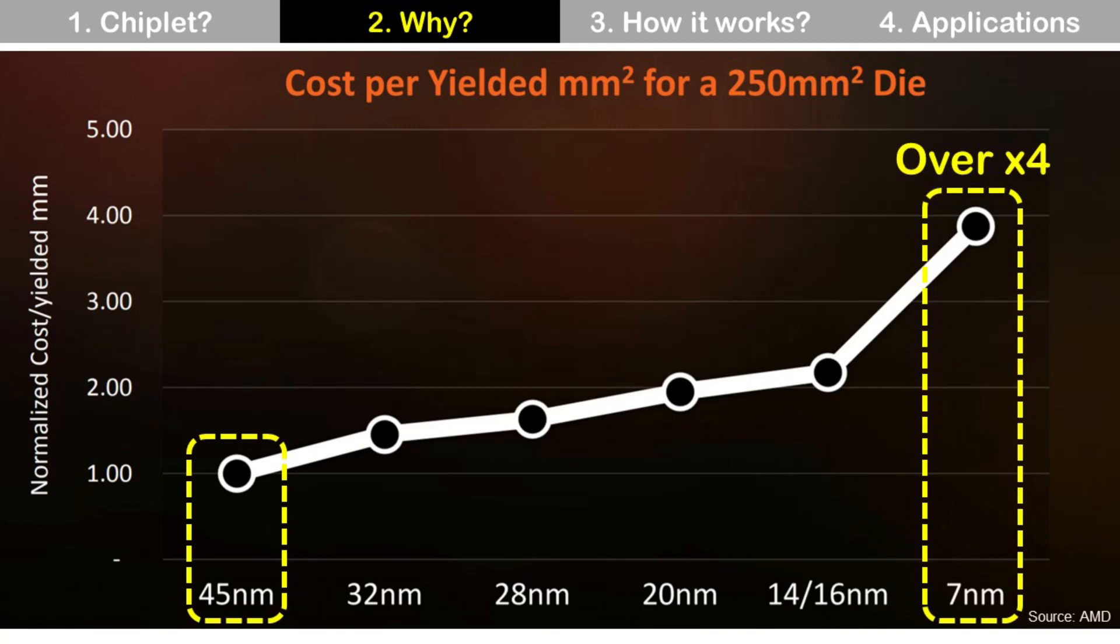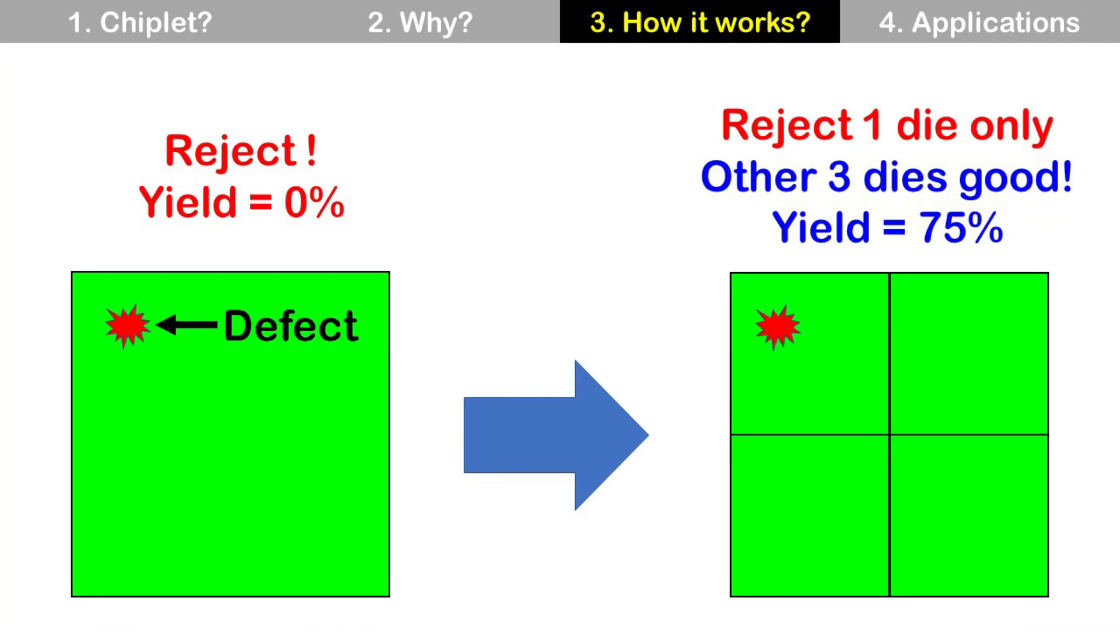Again, Chiplet is to break down a large expensive single die into multiple smaller dies. How it works? This is simple comparison between one large die and four small dies. If there is a defect at the upper left of the die, then it is reject. One die reject out of one die, so yield is 0%. If we have four small dies, and there is same defect at the exact same location, then only one die is reject out of four dies, and yield is 75%. That means we still can save three dies.